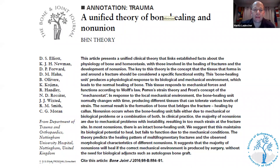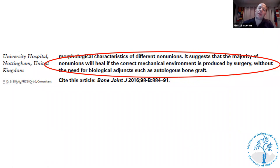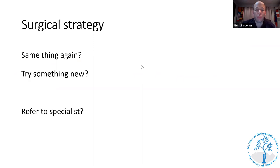A panel of experts reviewed the various theories of bone healing and how mechanics influence healing. The most important quote from the article states that the majority of non-unions will heal if the correct mechanical environment is produced by surgery, without the need for biological adjuncts such as autologous bone graft.